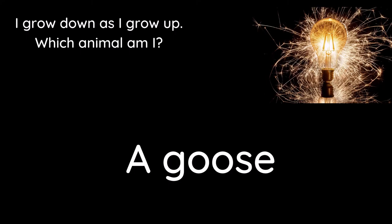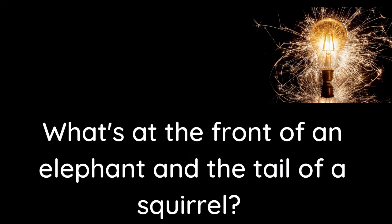The answer to last week's brain teaser is a goose, because they grow down feathers as they grow up. The question this week is: what's at the front of an elephant and the tail of a squirrel?